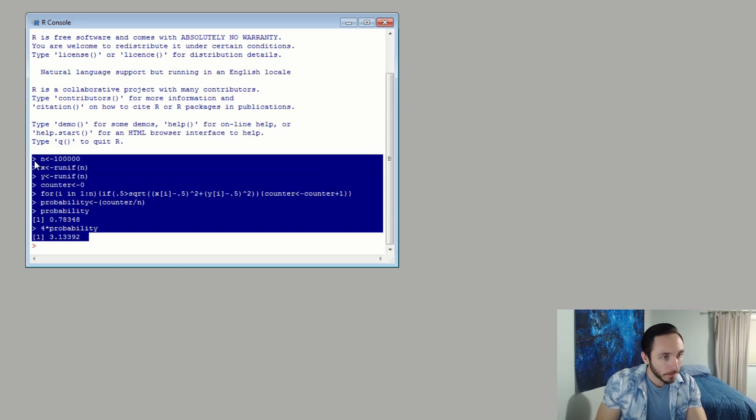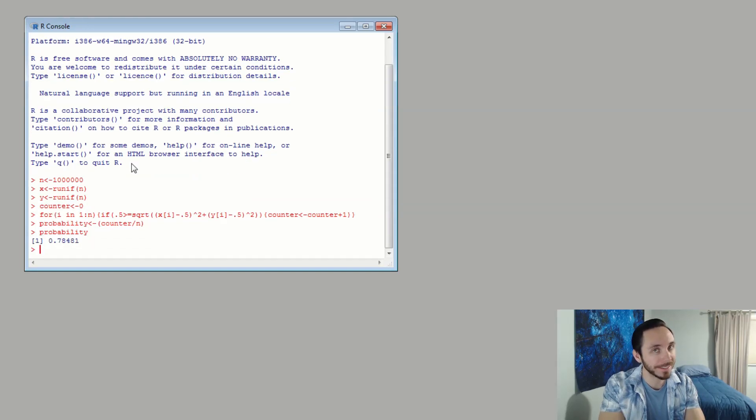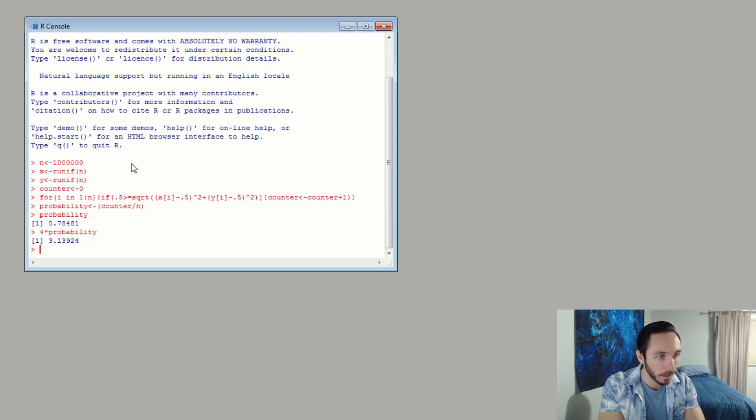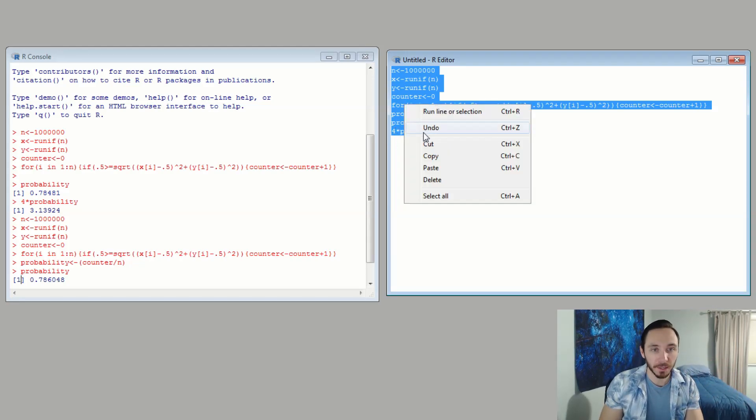I don't like this outcome. I want to run this again. I just rewrote the code. All I did was add an extra zero to make N 1 million darts. Let's see what that new probability is. Let's see if it made a difference. Looks like it's slightly different. Obviously it's not going to be exactly the same. Let's figure out what four times that probability is. Let's hope we're closer to pi. A little bit closer.